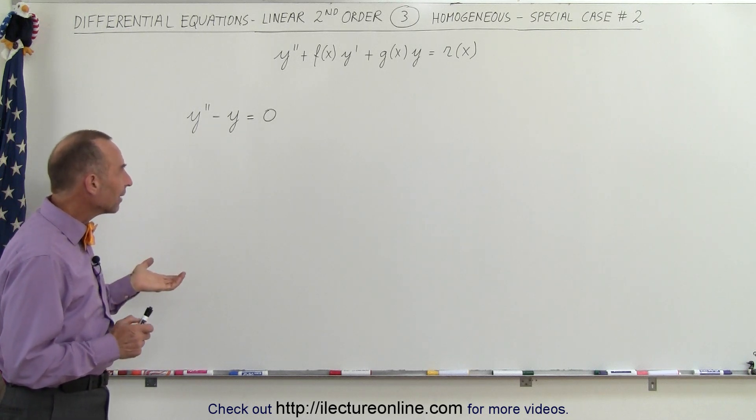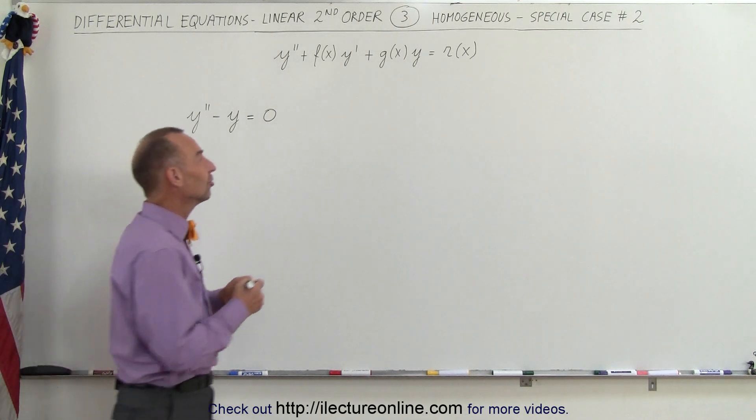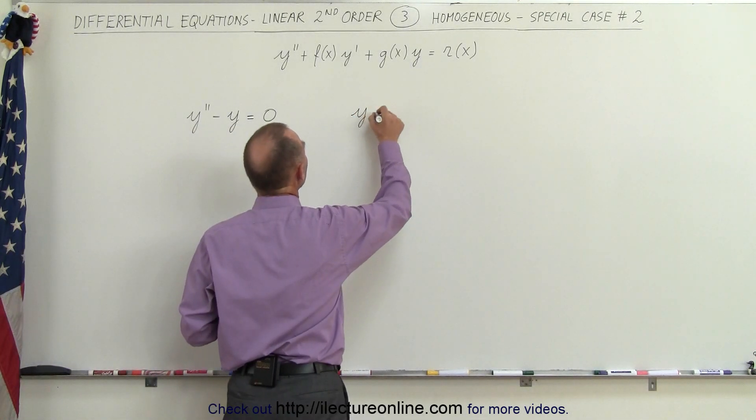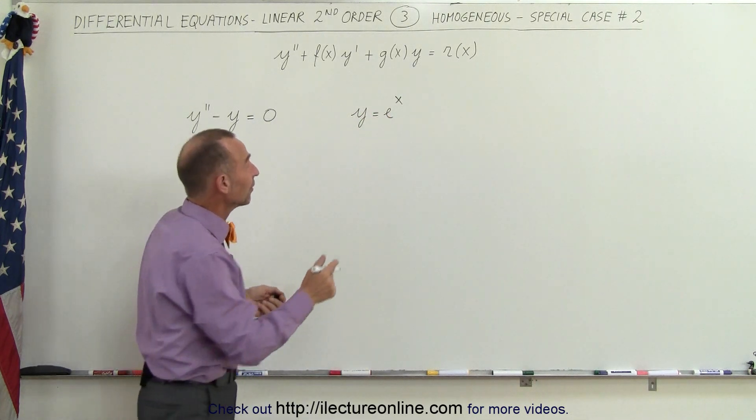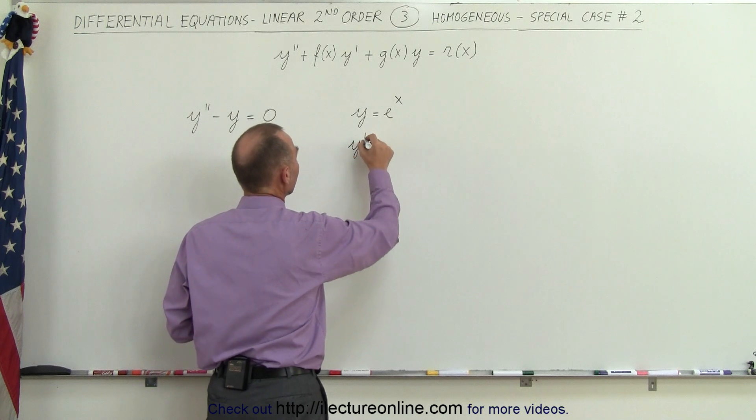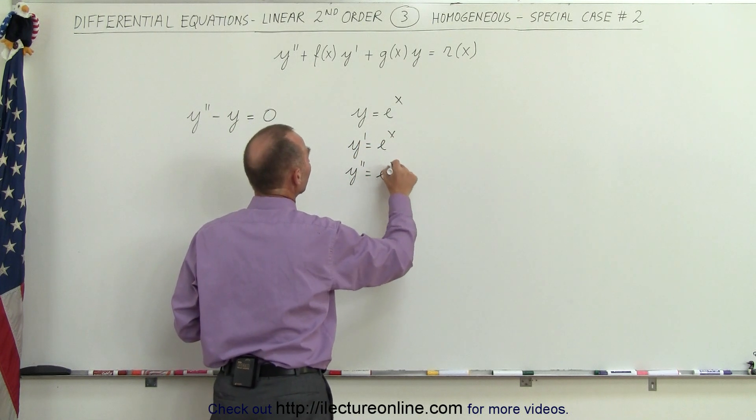Now when you look at that you may not realize at first but there's a very easy solution there. The solution is this: y equals e to the x because if we take the second, the first derivative of that, y prime, that is also e to the x and y double prime is equal to e to the x.